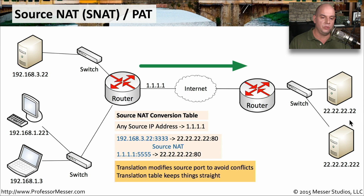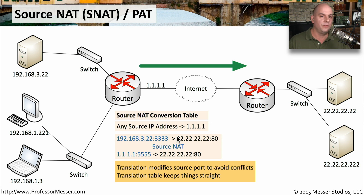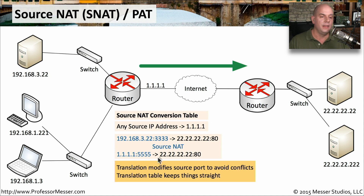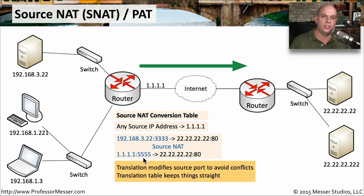Let's assume that 22.22.22.22 is a web server, and we have a 192.168.3.22 that would like to communicate to it. It's going to send traffic from 192.168.3.22, and our outgoing traffic is going to use a random port number — something like 3333 — communicating to the well-known port 80 on 22.22.22.22. We've told this NAT device to perform a source NAT, changing the source address as the packet passes through. By the time that packet reaches the other side of the router, the source is changed to 1.1.1.1 and the port number may be changed to 5555. The destination IP address doesn't change at all — that's why we call it a source network address translation.